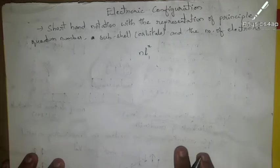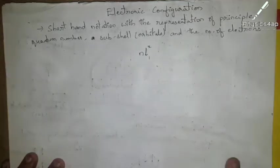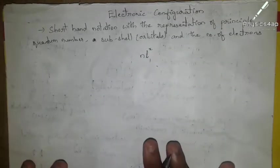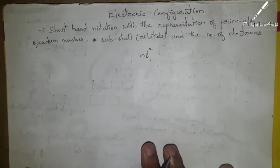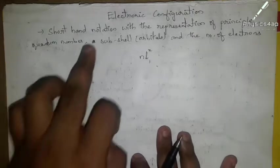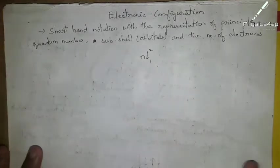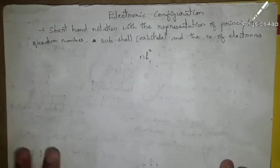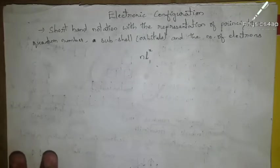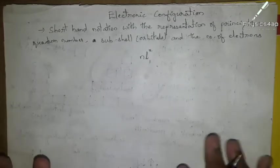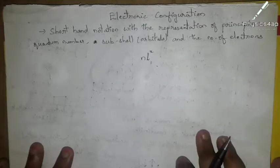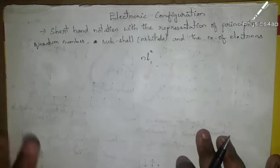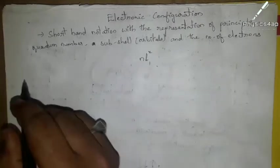Before going to the electronic configuration, there are some rules and principles which we need to follow. We should not blindly write the electronic configuration as 1s, 2s, and so on. The electronic configuration needs certain principles and rules to be followed.